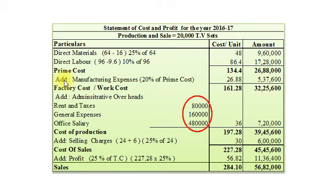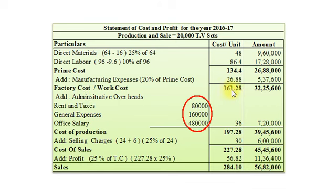Now we will add Manufacturing Expenses. For the year 2016-17, as per additional information number 3, Manufacturing Expenses is 20% of Prime Cost. So 20% of 134.4 is Rs. 26.88, and total Rs. 5,37,600. Our Factory Cost or Work Cost amounts to Rs. 161.28 per unit and Rs. 32,25,600 total.